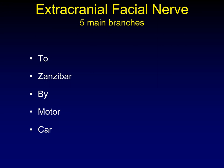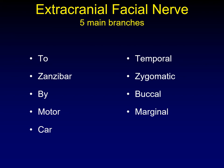Once the facial nerve exits the stylomastoid foramen and enters the parotid gland, it has five main branches — some smaller posterior branches exist as well. The mnemonic for the five branches is 'to Zanzibar by motor car,' which translates to temporal, zygomatic, buccal, marginal, and cervical. The one most people get wrong is marginal — people want to say mandibular, but while the full name is the marginal mandibular nerve, the correct abbreviation is marginal, not mandibular.